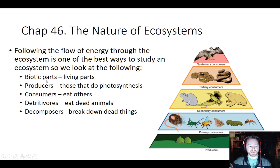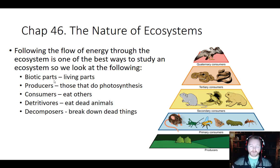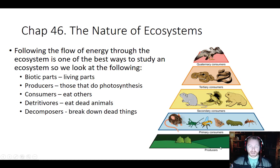Some terms we use when talking about ecosystems: we discuss the biotic parts, which means all the living components. We said earlier that we have producers, which are plants — they produce energy by capturing sunlight through the process of photosynthesis and storing it as glucose. Anything that eats something else is a consumer.